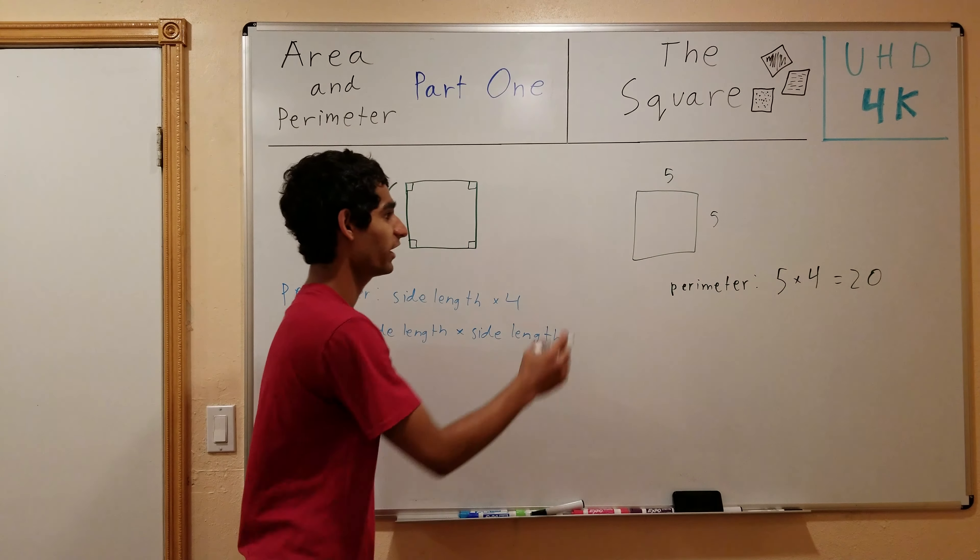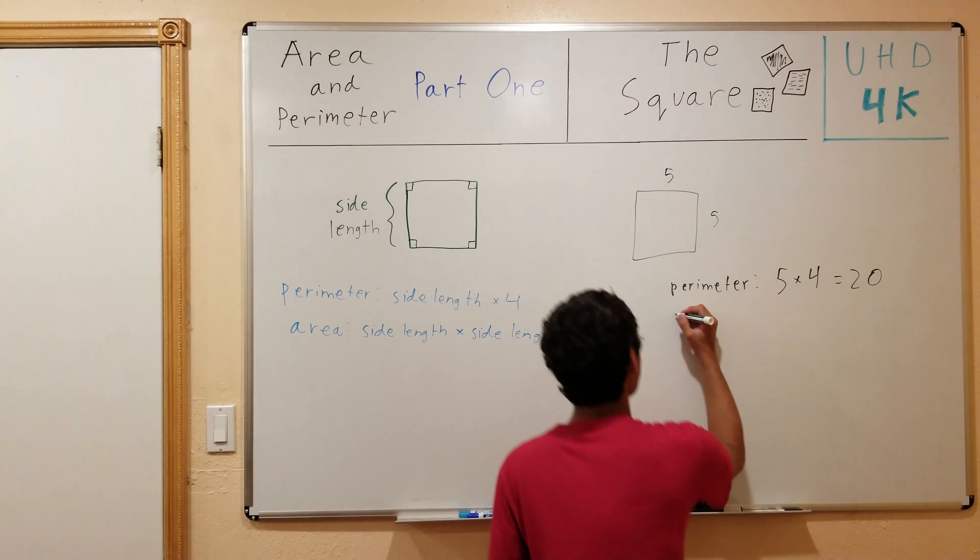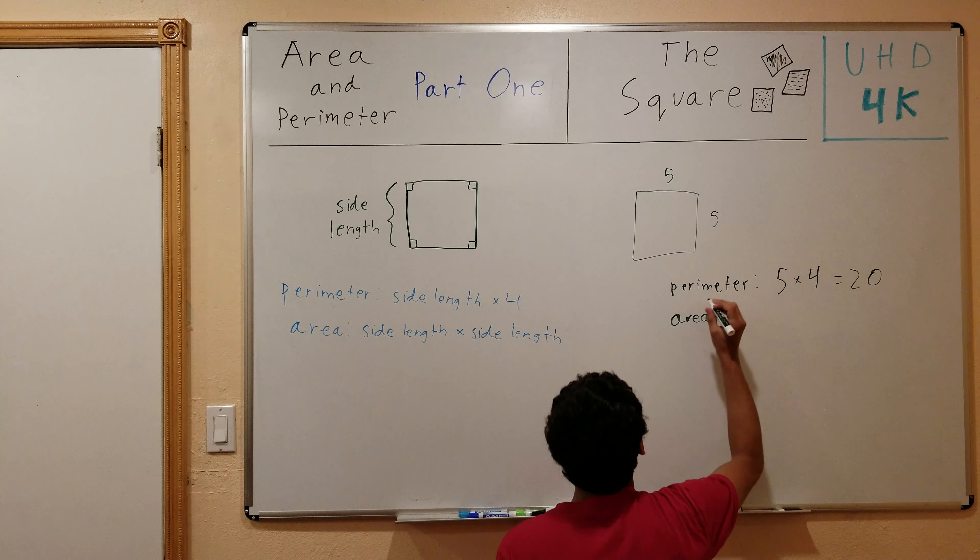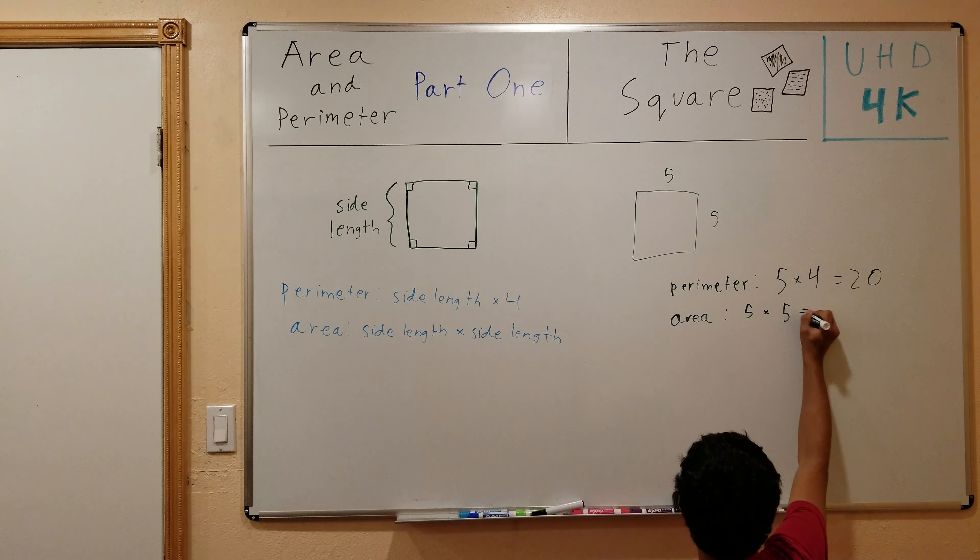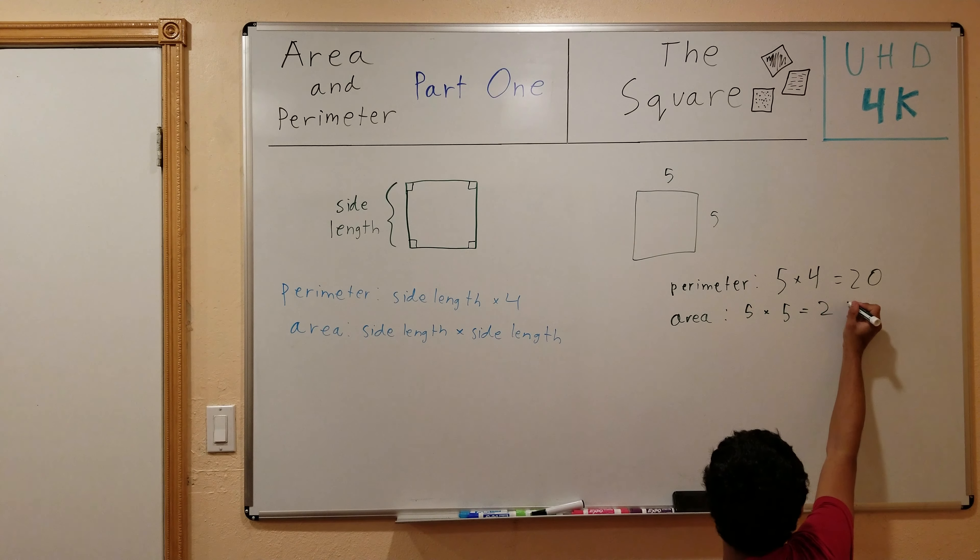And now to find the area of this square, area is equal to the side length, which is 5, times itself, 5 times 5, which is 25.